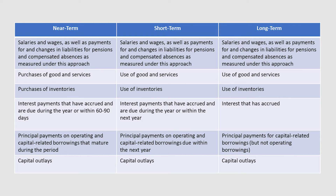All three would report outflows for principal payments on long-term borrowings, but the near-term approach would report just payments made during the year, the short-term approach would report as outflows of resources payments due in the next year, and the long-term approach would report only capital-related principal payments. Lastly, each approach would report outlays to purchase or construct capital assets as outflows of resources.